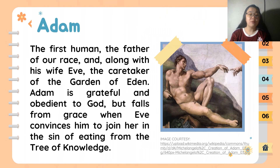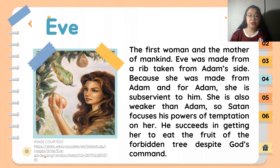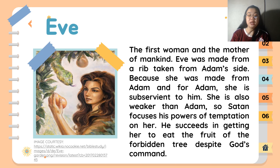For our next character, we have Adam — the first human, the father of our race, and along with his wife Eve, the caretaker of the Garden of Eden. Adam is grateful and obedient to God, but falls from grace when Eve convinces him to join her in the sin of eating from the tree of knowledge. Eve is the first woman and mother of mankind, made from a rib taken from Adam's side. Because she was made from and for Adam, she is subservient to him. She is also weaker than Adam, so Satan focuses his powers of temptation on her, succeeding in getting her to eat the fruit of the forbidden tree.